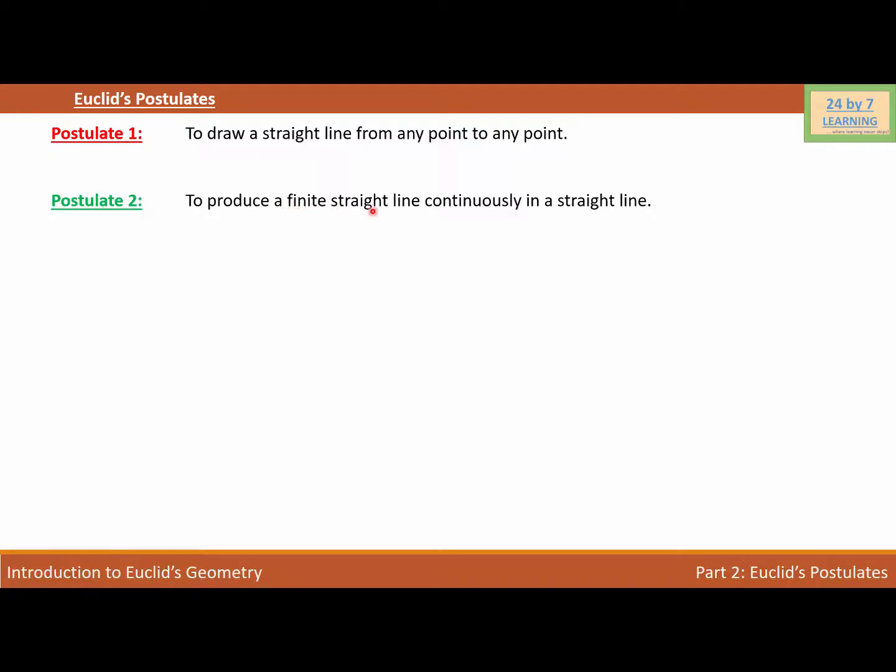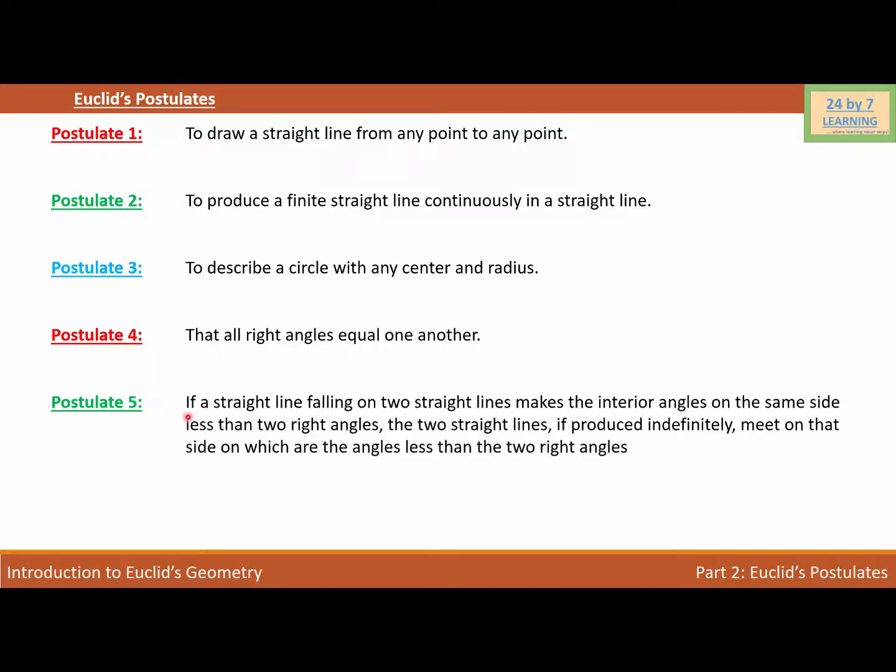Postulate 3: To describe a circle with any center and radius. Postulate 4: That all right angles equal one another. Postulate 5: If a straight line falling on two straight lines makes the interior angles on the same side less than two right angles...